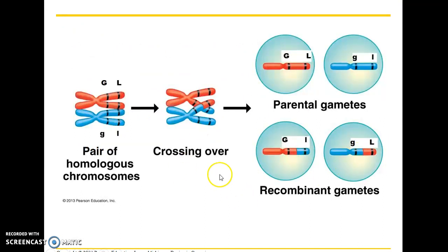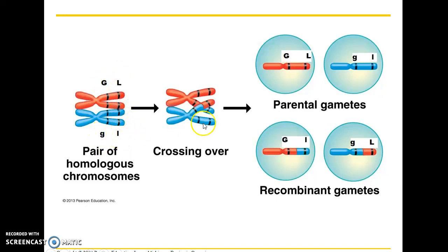Crossing over is the exchange of genetic information between non-sister chromatids of homologous chromosome pairs. With a pair of homologous chromosomes — one carrying gray body and long wing alleles, one carrying black body and short wing alleles — crossing over can still occur even with linked genes, producing recombinant parental gametes with new combinations of the parental genotypes.